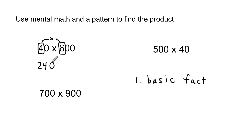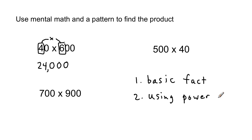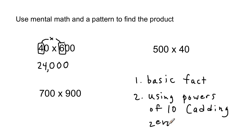That's how we do this mentally — the basic fact you know, and then taking the zeros from the two factors and writing them onto the product. There's one zero from 40 and two zeros from 600, so 40 times 600 is twenty-four thousand. I got that from multiplying the basic fact and then using powers of ten — adding zeros onto the number.